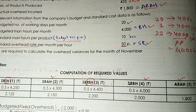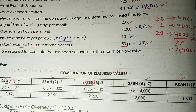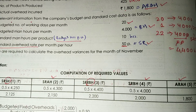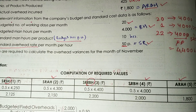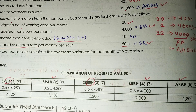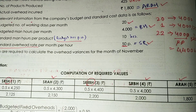The six variances are: Efficiency Variance, Volume Variance, Cost Variance, Capacity Variance, Calendar Variance, and Budget Variance. With that, Illustration 13 is also complete. If you liked this video, please like it, share it with your CMA Inter friends, subscribe to The Witty Turtle channel, and join my Telegram group — the link is in the description below.